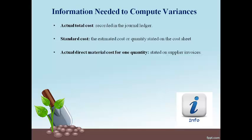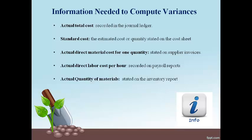Actual direct material costs are stated on the supplier's invoice paid by the company. Actual direct labor cost per hour is found in the payroll records. The actual quantity of materials purchased and used is stated on the inventory report. The actual hours worked are reported on the payroll reports.